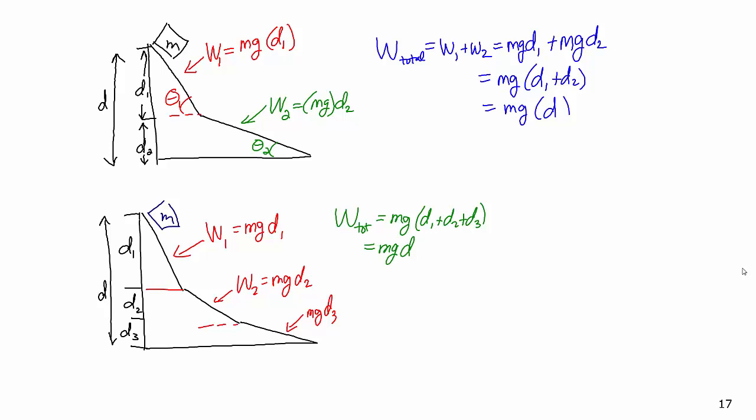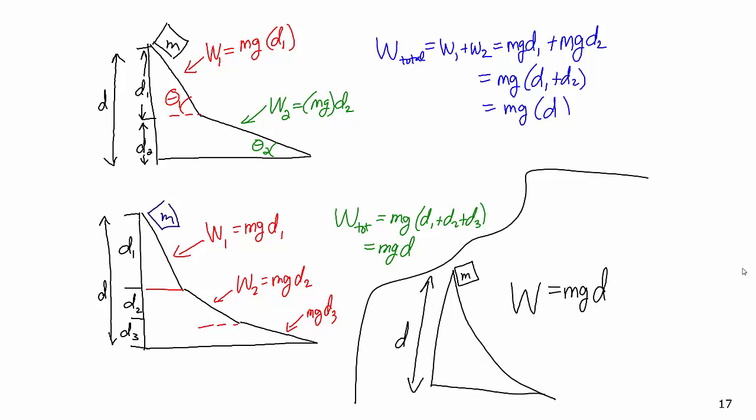So no matter how many pieces I break this up into, the work done is still going to be mg times the vertical distance d. And if we take this idea and extend it so that we have an infinite number of little pieces — which basically turns this ramp into a curved shape — the work done by the force of gravity would still be mg times the vertical distance d.